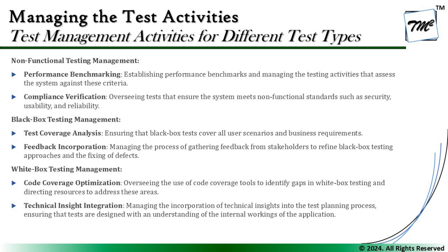For black box test management, we need to talk about test coverage analysis — ensuring that black box tests cover all user scenarios and align with business requirements. The second is feedback incorporation: managing the process of gathering feedback from stakeholders to refine black box testing approaches and the fixing of defects. During black box testing, the testing team reports defects to different stakeholders — design issues going to the designer, development issues to the developer — and we look forward to collaborate and assist them with all the information they need to perform better root cause analysis or resolve the reported defects.